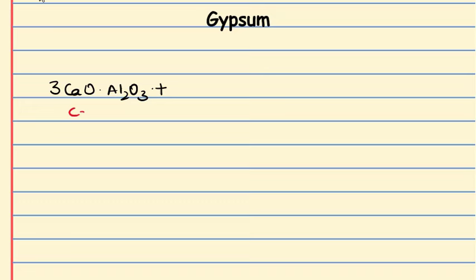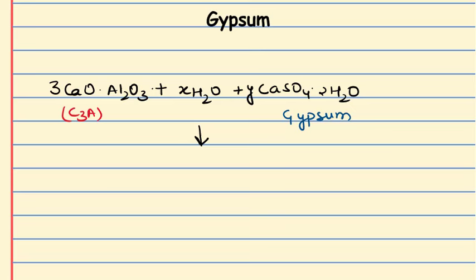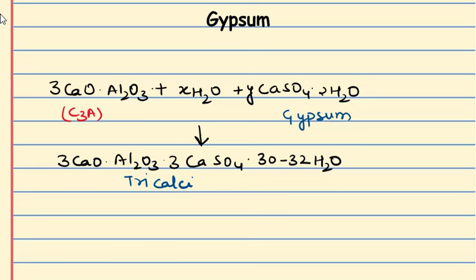We can see the reaction: tricalcium aluminate, which is 3CaO·Al2O3 (C3A), when it reacts with gypsum, it becomes tricalcium sulfoaluminate. The rate of setting of this compound is reduced, meaning gypsum works as a retarder in cement.